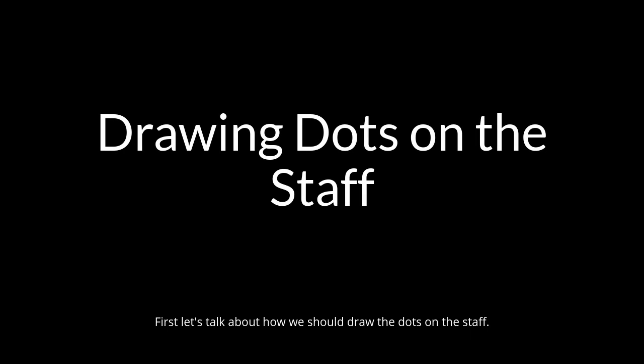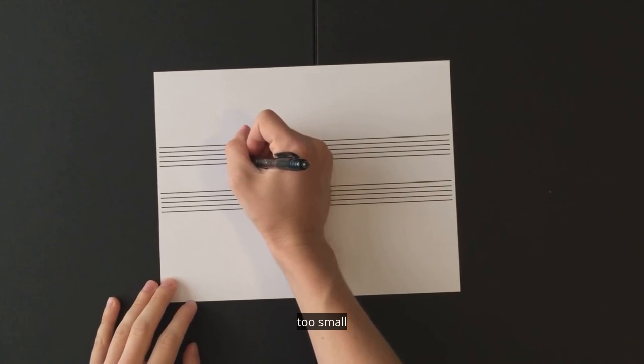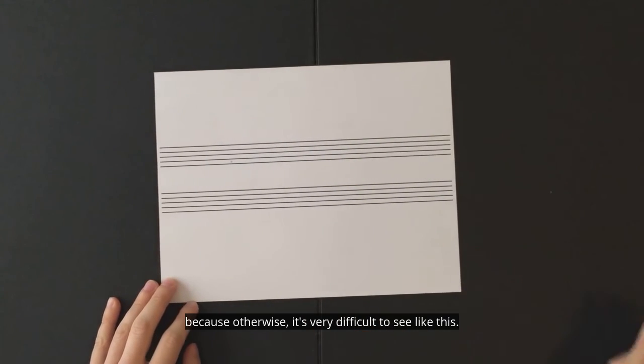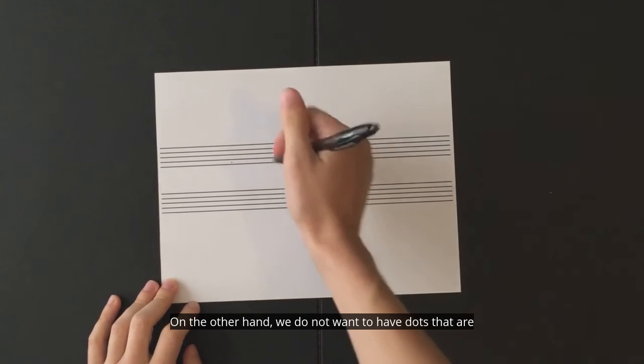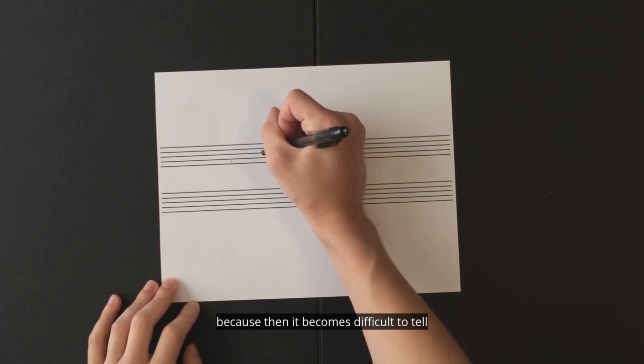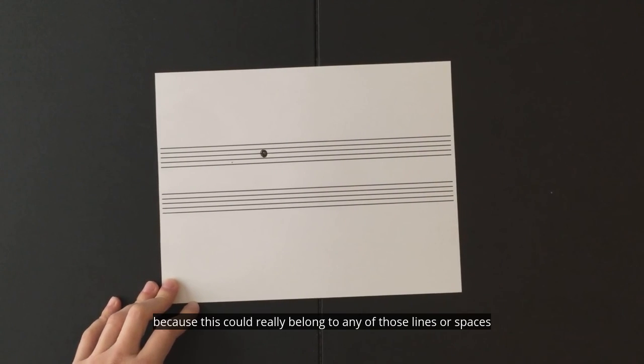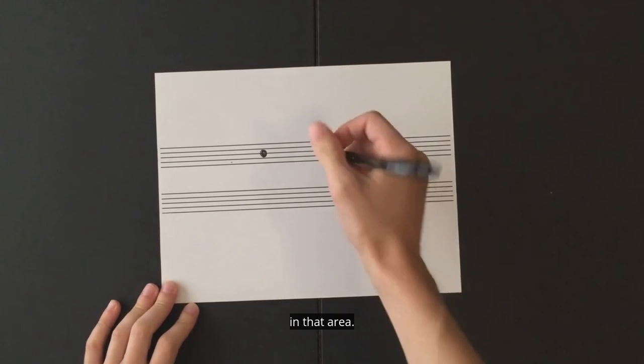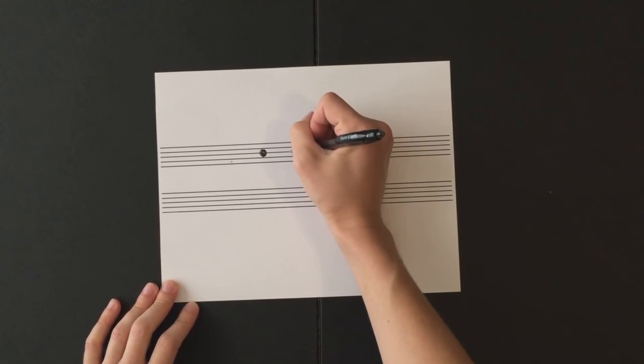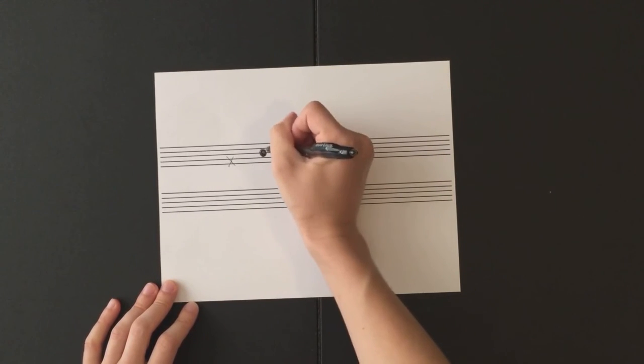First, let's talk about how we should draw the dots on the staff. We do not want to have the dots too small because otherwise it's very difficult to see. On the other hand, we do not want to have dots that are too large because then it becomes difficult to tell which line or space the dot is actually supposed to belong to, because this could really belong to any of those lines or spaces in that area. So we want it to be in between, not too large, not too small, but in between like this.